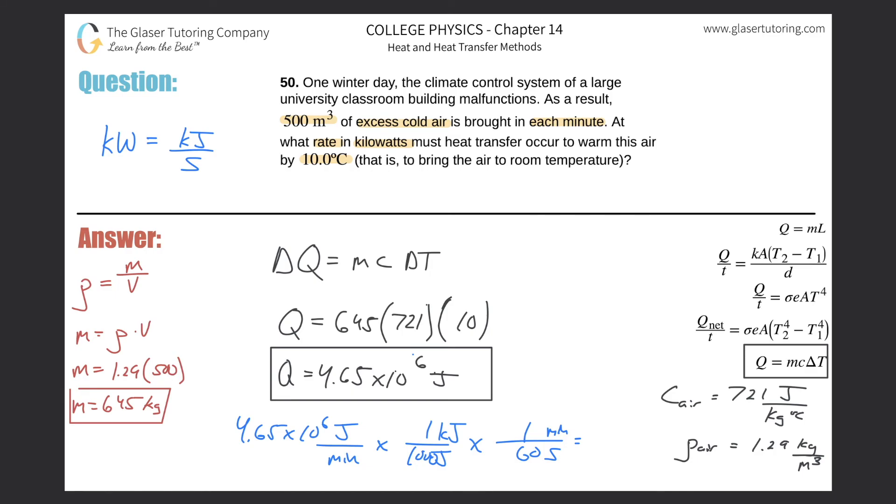77.5. So there's going to be 77.5 kilowatts, and I don't know why I wrote kilojoules there, not really sure, but that's kilowatts, all right? And that would be the rate of energy that's necessary to warm up that air that's coming into the room.